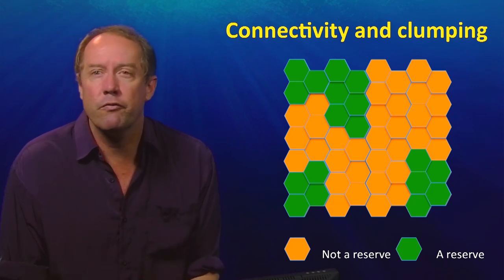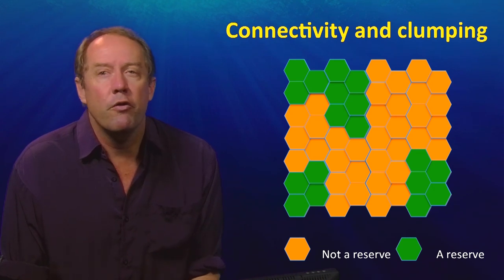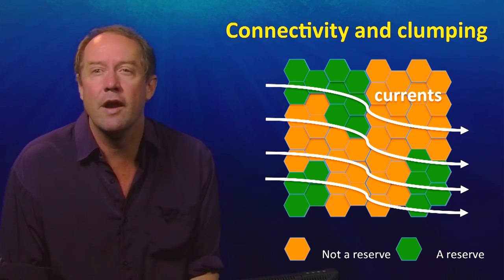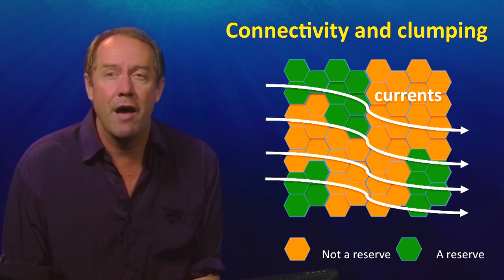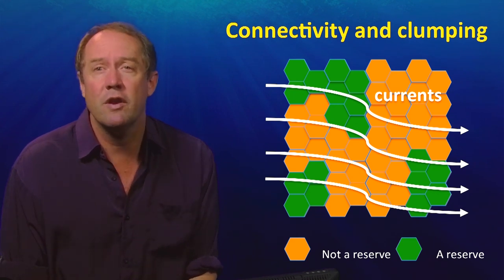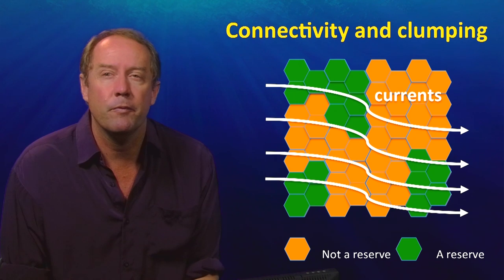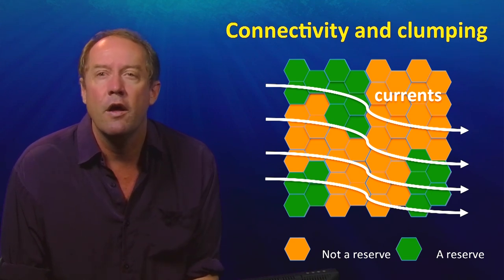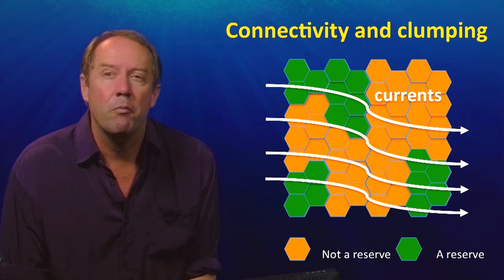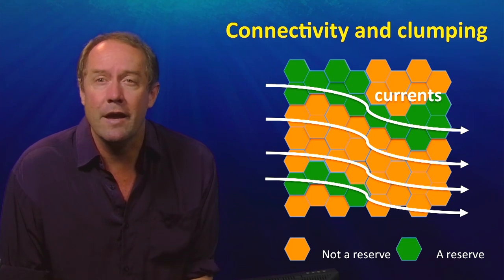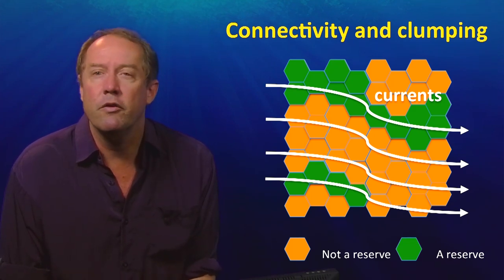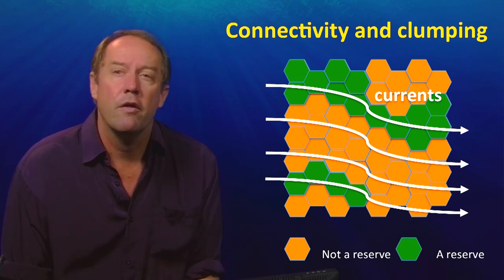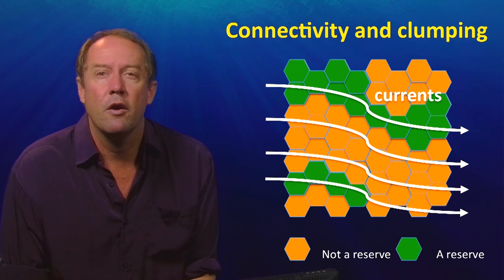So we can achieve a much more clumped system with just three reserves still representing all the features. But this isn't necessarily a well-connected system. If we know the prevailing system of marine currents, we can see that many larvae produced in particular marine protected areas would flow out of those systems, meaning we won't have long-term adequacy. The next step is to make a system that is not just clumped but also connected — a clumped protected area system connected through the flow of the currents. That ends our discussion of the fundamental principles of conservation planning and how they are being applied around the world to design marine protected areas.